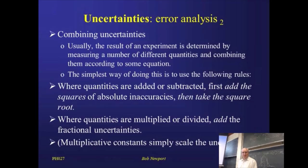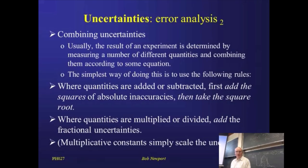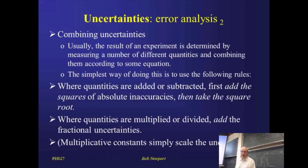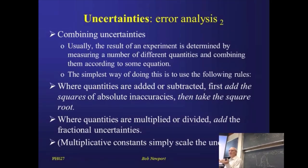If we need to combine uncertainties, there's a fairly straightforward set of rules. If we've got two things that are added or subtracted — so your final answer is a plus b, both of which you've measured, both of which have sigma values — then we're going to add the squares of the uncertainties and then take the square root. So we take sigma_a and sigma_b, square both of them, add those two squares together, and then take the square root.